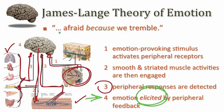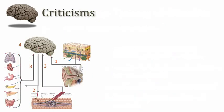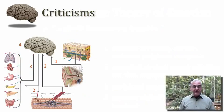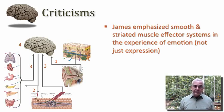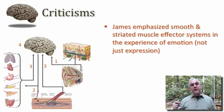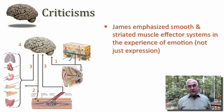So in James's concept, the emotion is elicited by peripheral feedback. This is why he so famously stated that we are afraid because we tremble — note the causal direction: fear is the consequence of the physical act of trembling. These ideas were controversial right from the start, and there are critics today who continue to find fault with this notion. James emphasized the importance of smooth and striated muscle effector systems not just in the expression of the emotion, but in the actual experience of it — it's the secondary sensations derived from these effector systems that elicit the emotion in the James-Lange theory.